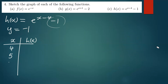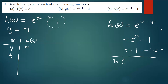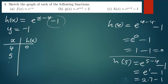Finding the corresponding values: h of four is e to the power four minus four minus one, which is e to the power zero minus one, giving one minus one equals zero. h of five is e to the power five minus four minus one, which is e to the power one minus one. Using e as 2.7, that gives 2.7 minus one equals 1.7.